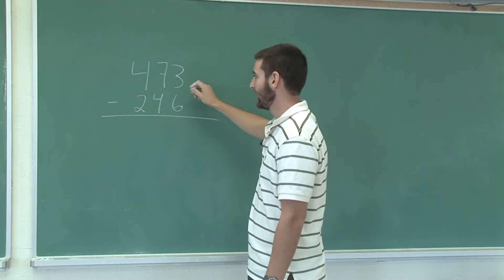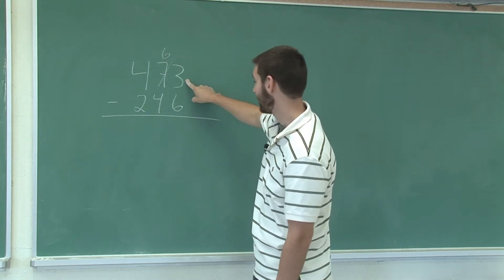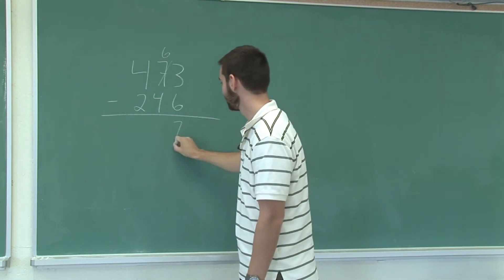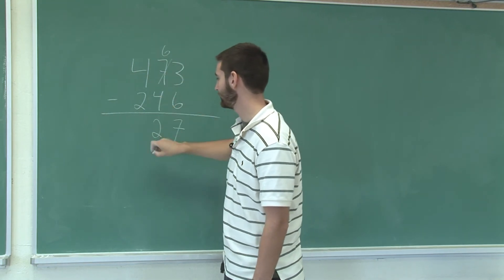I'm going to borrow from the 7 and make it a 6 to make this a 13. 13 minus 6 is 7. Now 6 minus 4 is 2. 4 minus 2 is 2.